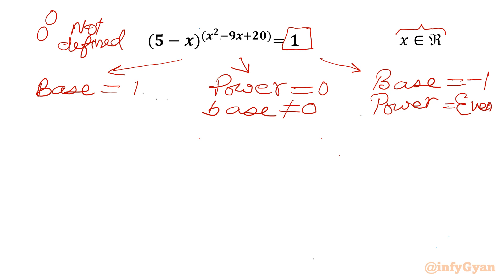In the context of our exponential equation, let us consider our first case base equals 1. So base is 5 minus x equal to 1. So I can write x will be equal to 5 minus 1, so x will become 4.